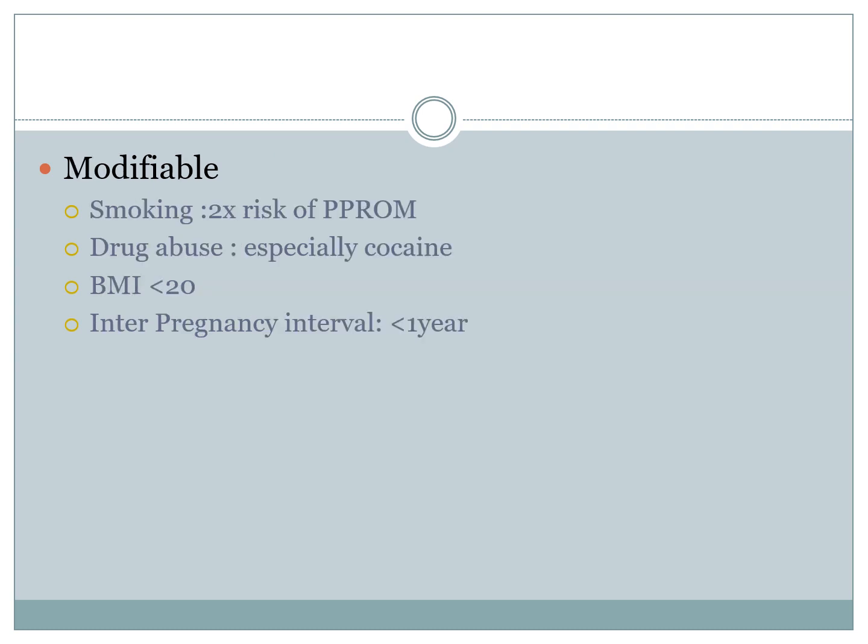Modifiable risk factors include smoking, which gives a twice the risk for preterm pre-labor rupture of membranes; drug abuse, especially cocaine; a BMI of less than 20; and an inter-pregnancy interval of less than one year.